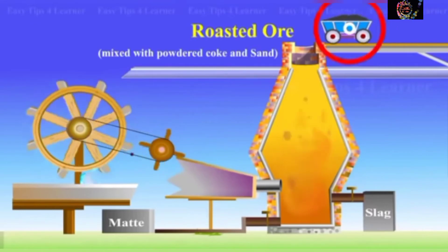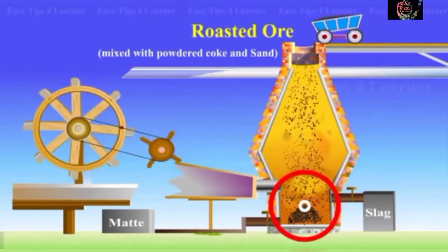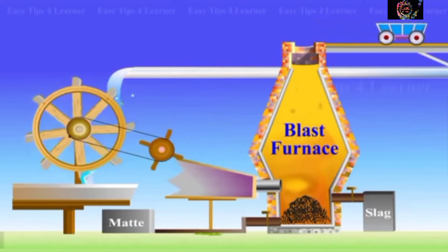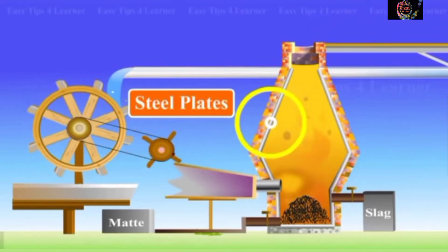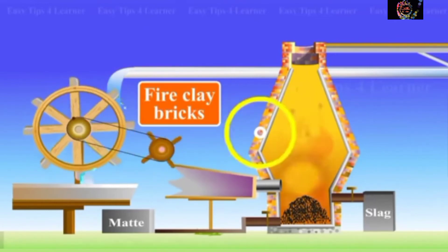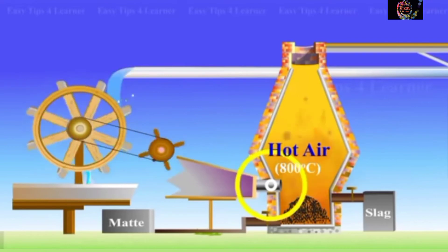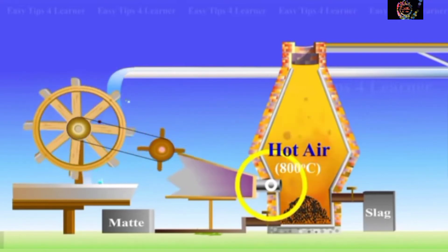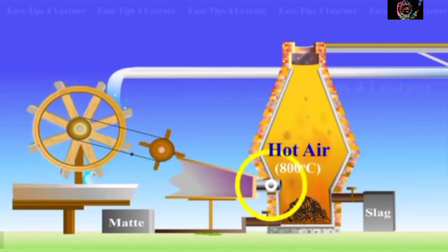The third step is smelting. The roasted ore is mixed with powdered coke and sand and is heated in a blast furnace made of steel plates lined inside with fire clay bricks. Hot air at 800 degrees Celsius is introduced from the tuyeres near the base of the furnace, as a result of which the following changes occur.